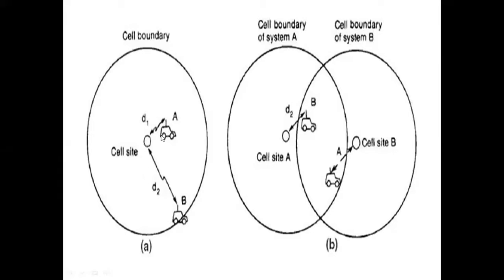In the figure, the cell site should receive a signal from mobile unit B, which is far away. However, mobile unit A is nearer to the cell site, so the cell site receives a strong interference signal from mobile unit A instead. This undesired strong signal is known as near and foreign interference. It can occur at the reception point of the cell site.